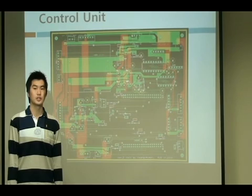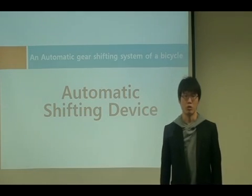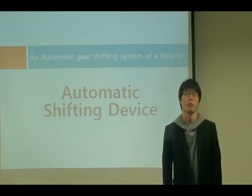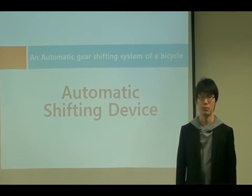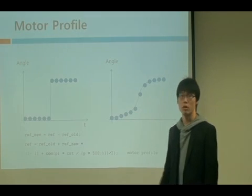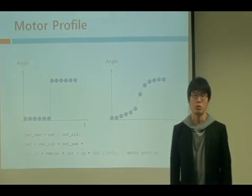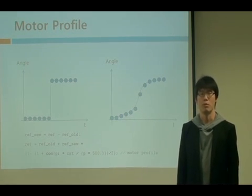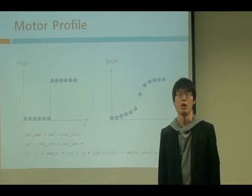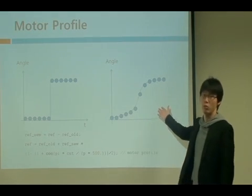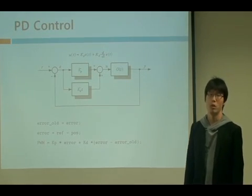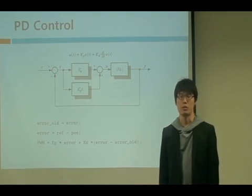Let's go on to see how the shifter works. Hi, I am Choi Sung Hoon. I am in charge of mechanical design for this project. Here I am going to talk about the automatic shifting device. Please look at this picture — it shows how the system controls the DC motors. To prevent an impulsive effect on the system, a cosine curve is fed to the motor driving circuit. We apply PD control for motor position control to obtain a faster response.